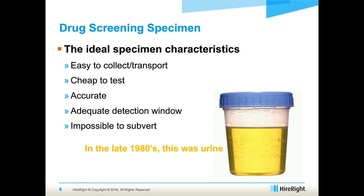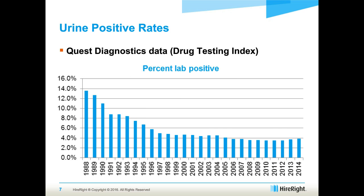In the late 1980s, it was determined throughout industry and the drug testing arena that urine was the specimen. Quest Diagnostics, one of the major drug testing labs in the country, every year posts the Drug Testing Index that basically shows what they're seeing from a lab positive rate perspective within their urine program, their oral fluid program, as well as their hair program. This lab is really leading the way in publishing this data.